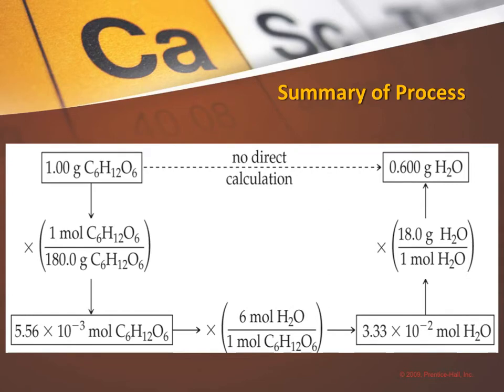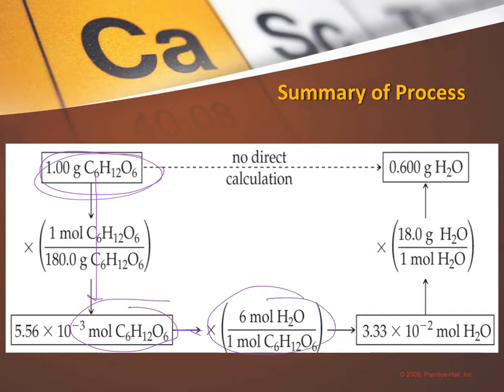Your answer is 0.600 grams of water can be produced by combusting one gram of glucose. To recap the mole map: start with grams of one substance, use molar mass to get moles of that substance, use mole ratio to get moles of the substance you're interested in — water in this case — and then use the molar mass of water to get to grams of water.